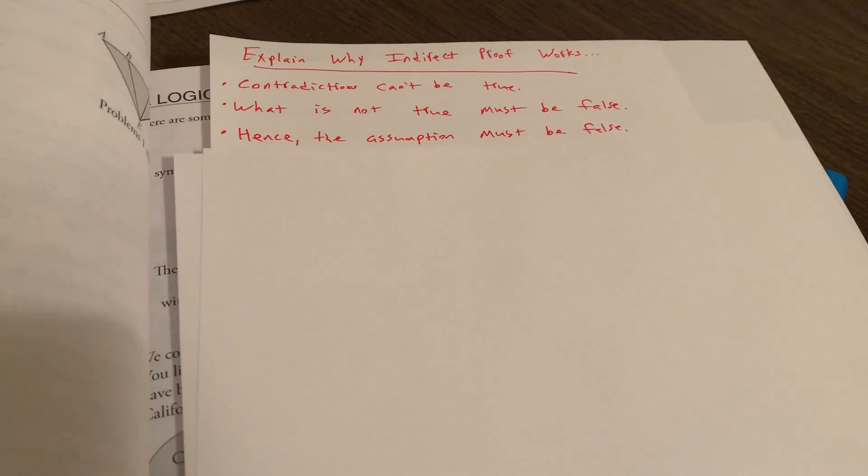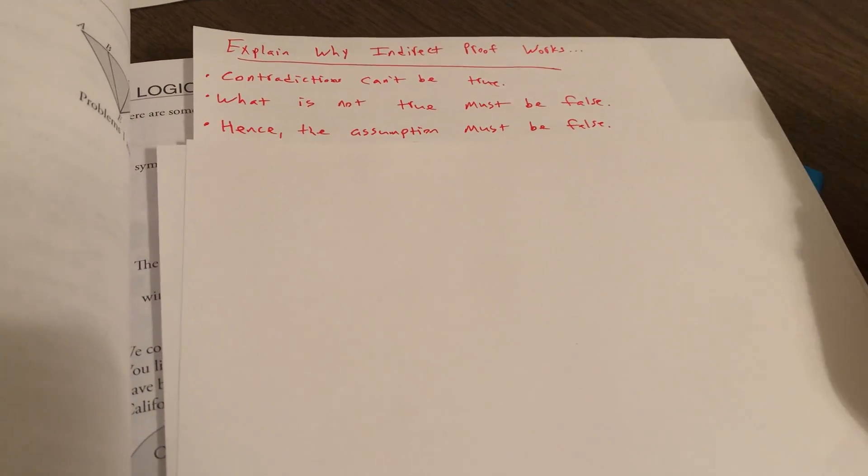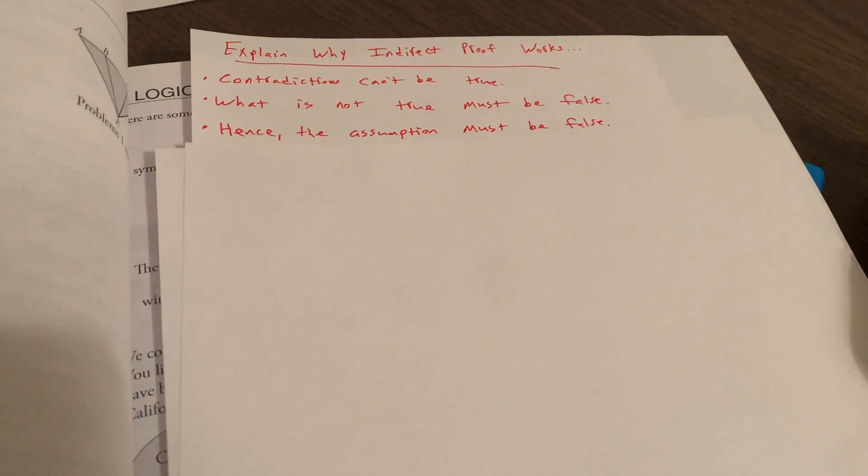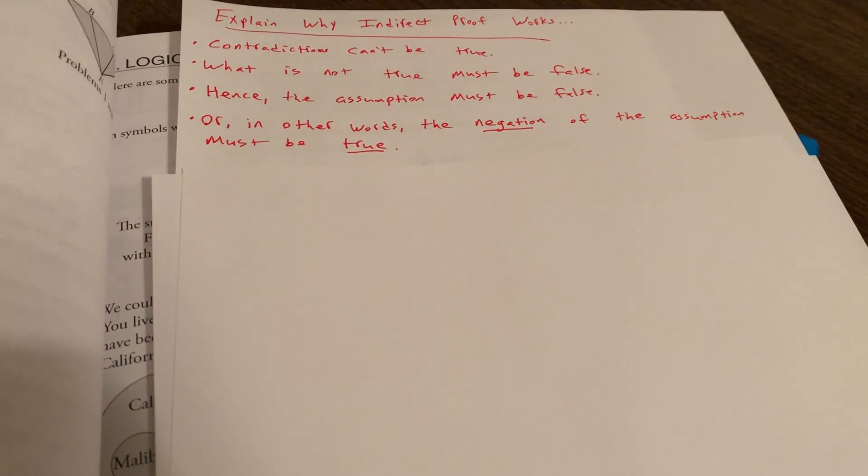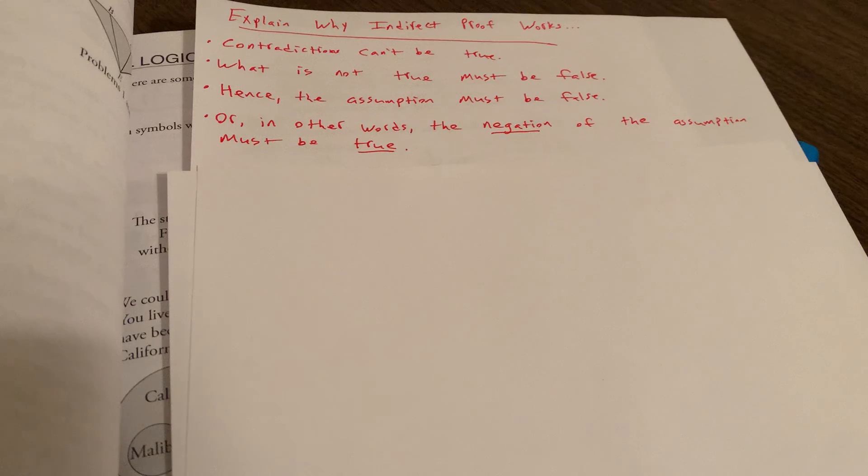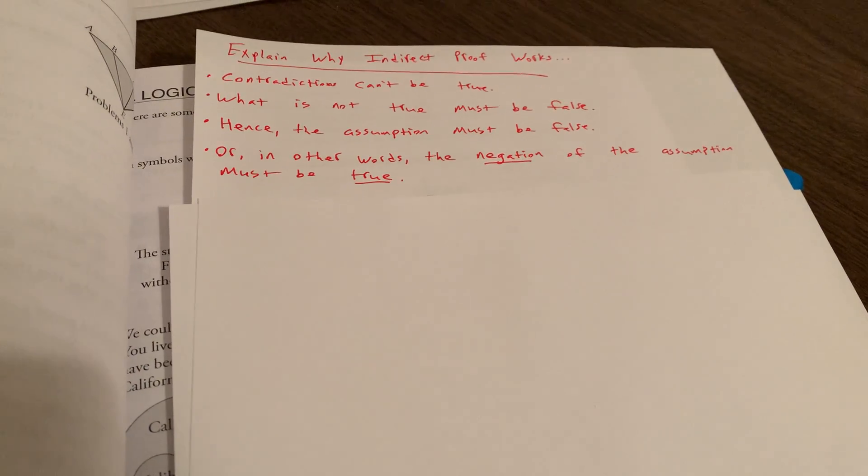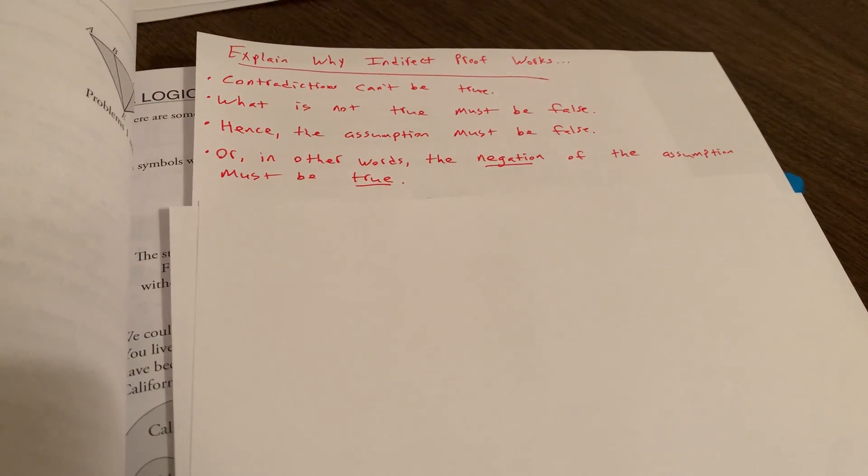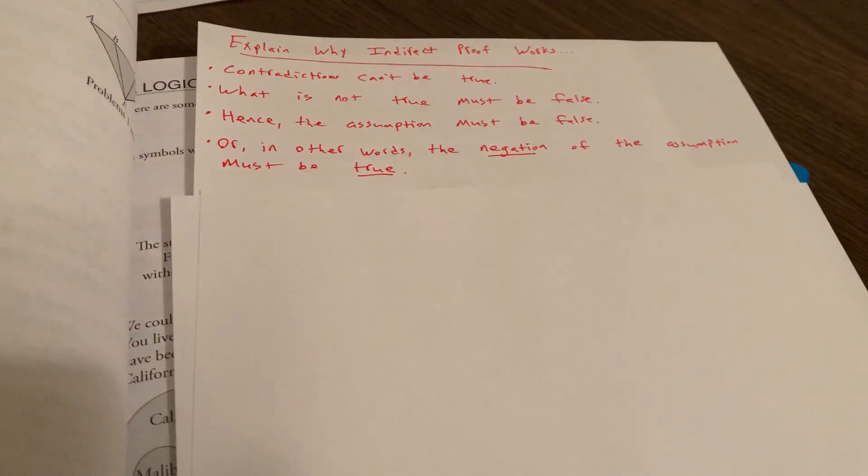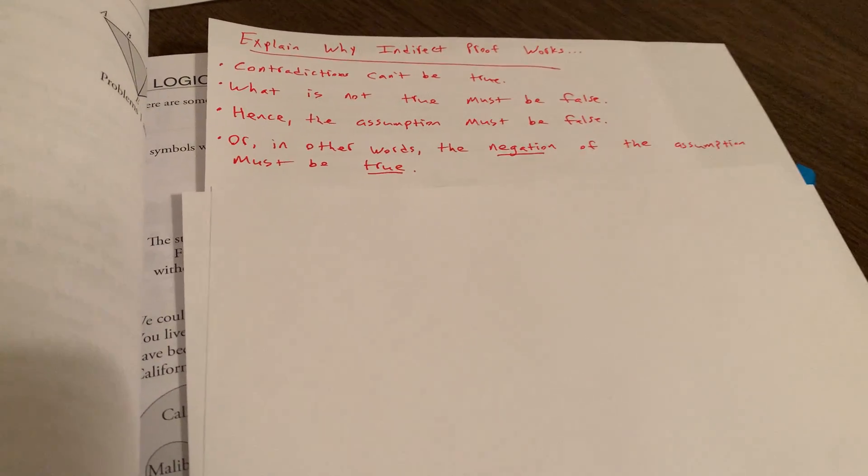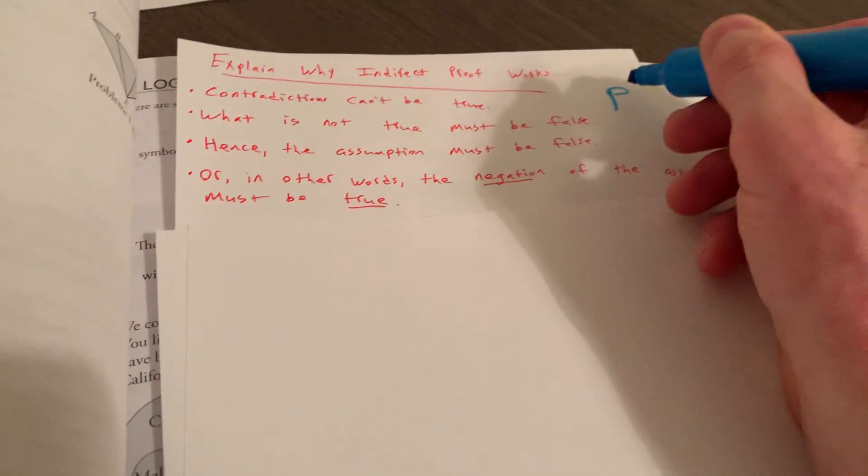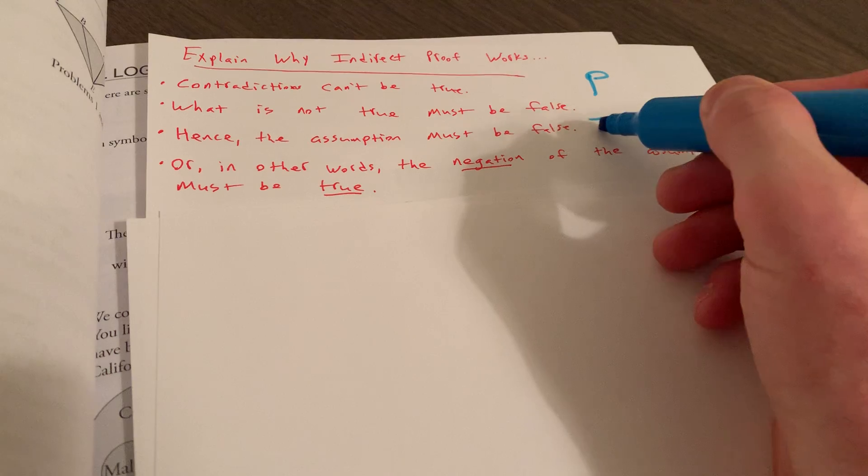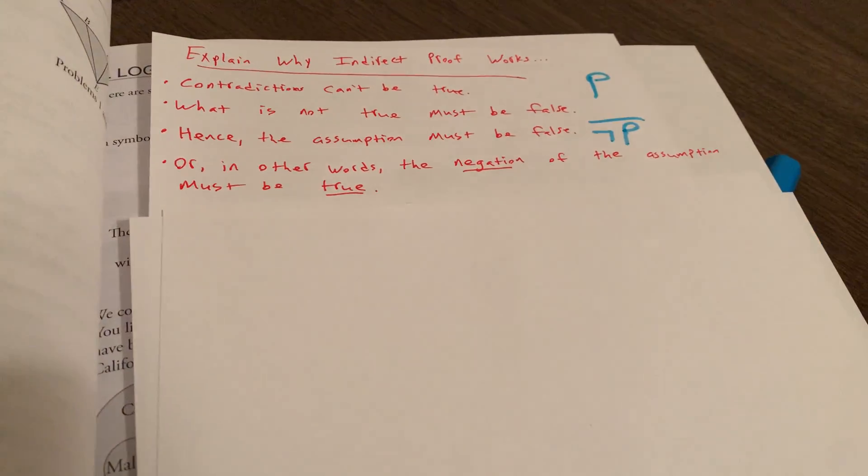But why does that work? We can think about this a little bit more in detail. Contradictions cannot be true. That's why an indirect proof works. And what is not true must be false. Hence, the assumption must be false. That's essentially how an indirect proof works. We can also say it's based on the law of excluded middle. If we have a proposition, it's going to be true or false, but not both of them. Or in other words, the negation of the assumption must be true. So we have an assumption. That assumption leads to a contradiction. So that assumption must be false. And so the negation of that assumption must be true. So if we start out with the assumption of P, we derive a contradiction, then we conclude that not P is the case.